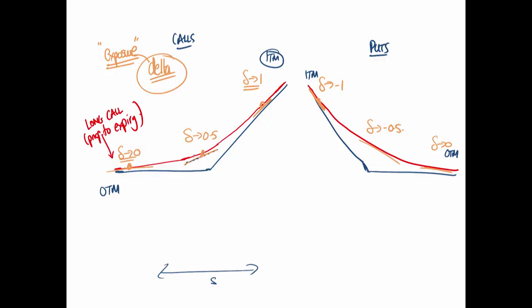If this option has a gamma of 0.031, that means for a dollar rise in the underlying S, the call's delta will be 0.031 higher — you'd expect the delta to expand to 0.501. Gamma is telling you how much your delta is changing for a unit move in the underlying. It's only an approximation, but helps us understand how our option behaves on a convex curve.